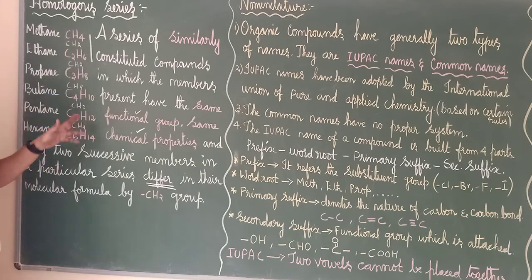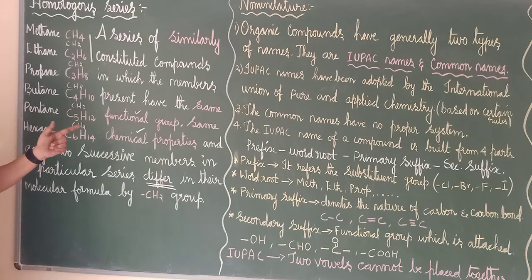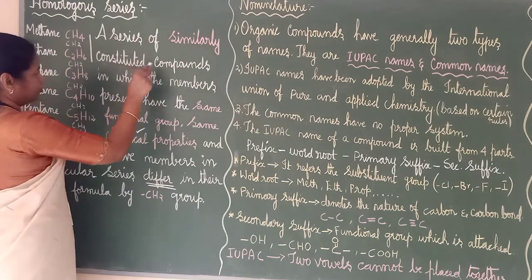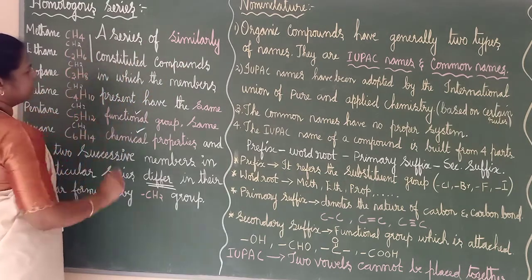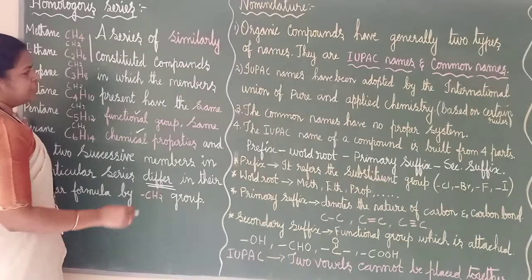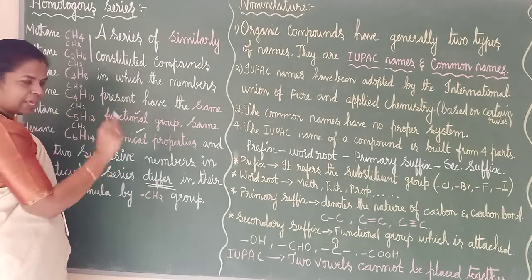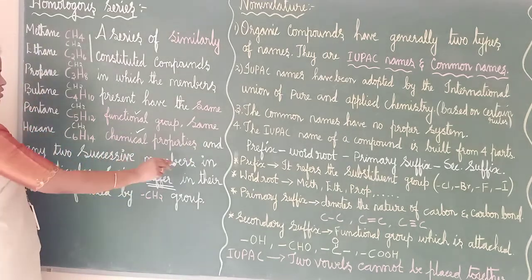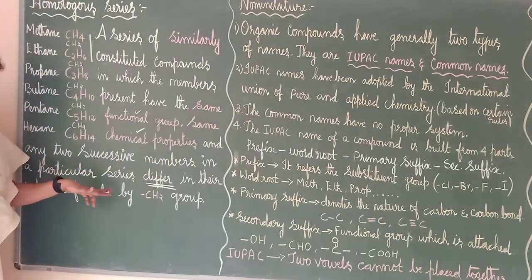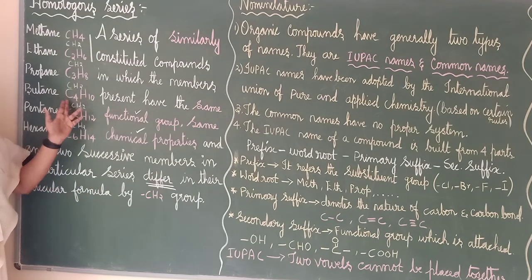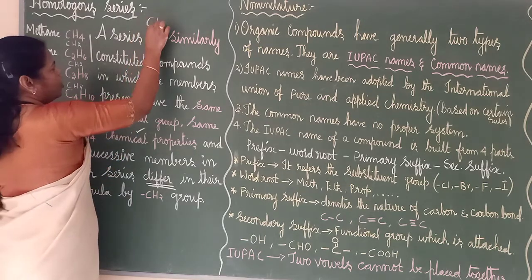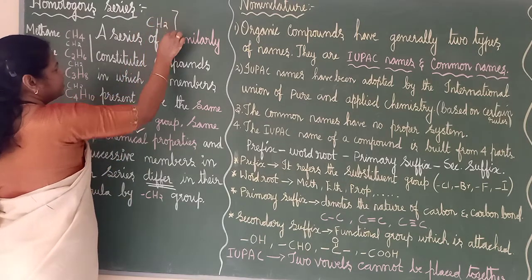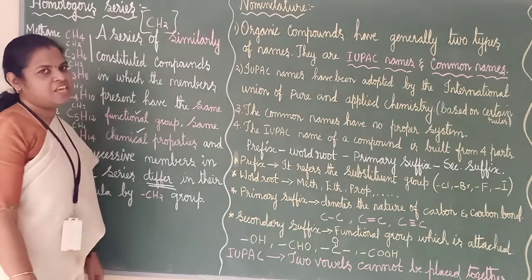Same way, you can check this with alkene as well as alkyne also — the difference will be CH2. Always you should keep in mind that successive members should differ by CH2.